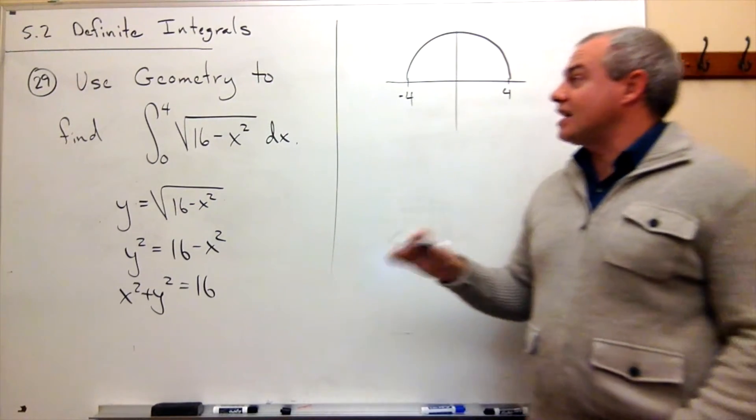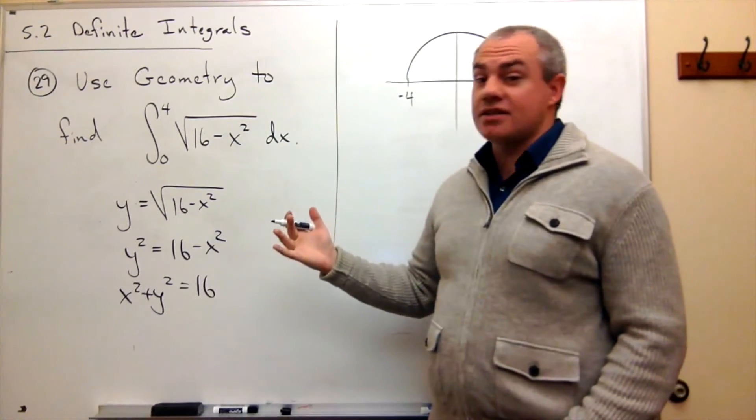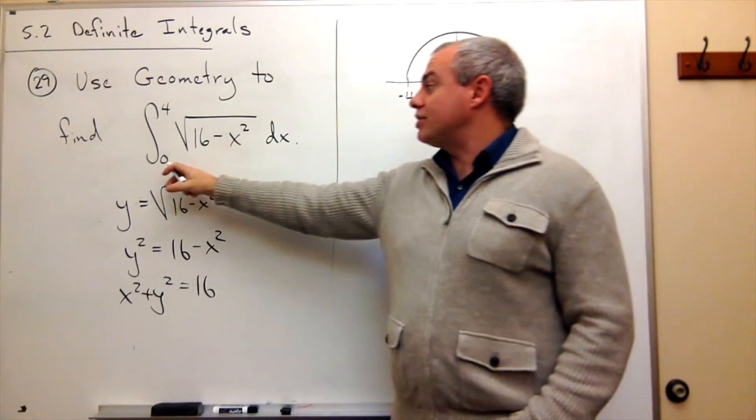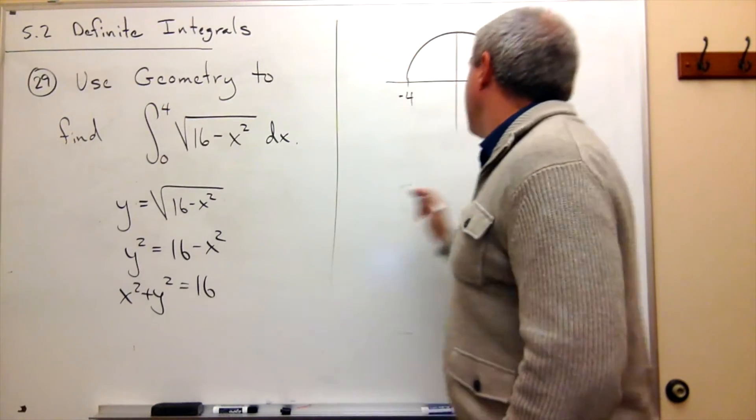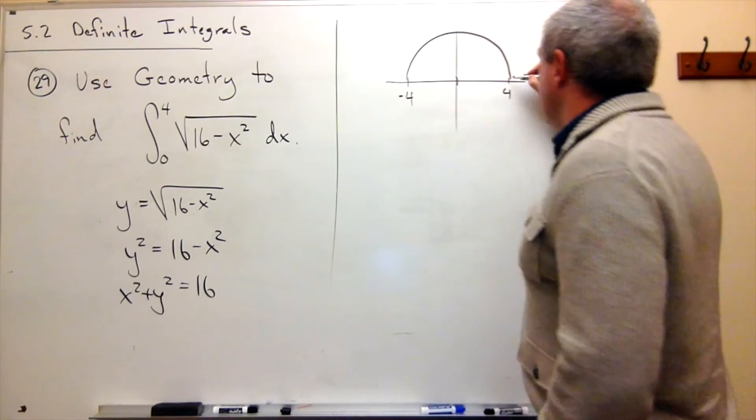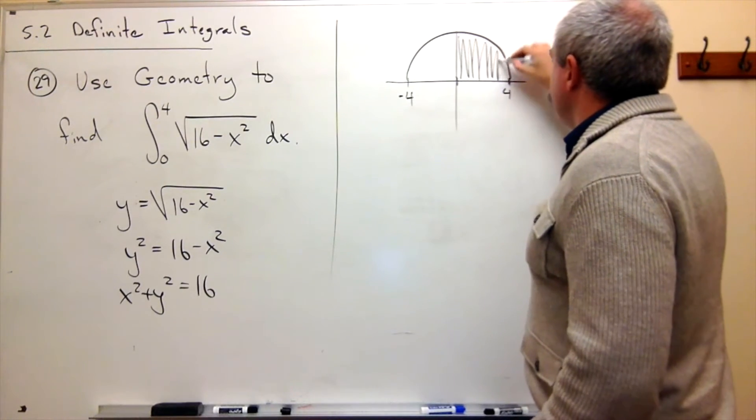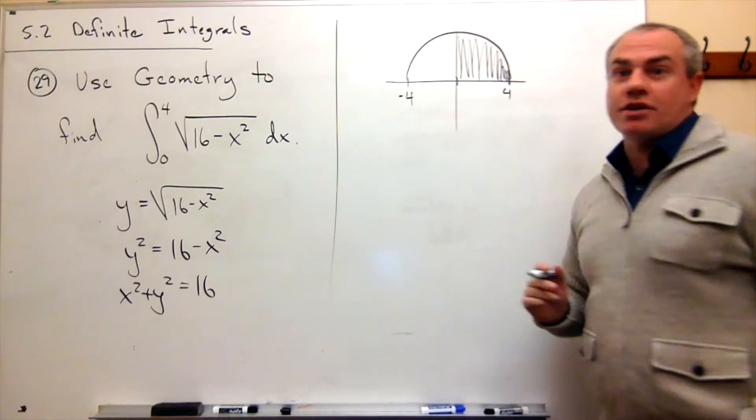And remember what I said the problem was actually asking us is how much area is there under this curve between 0 and 4? So here's 0, here's 4, and I'm asking how much area is under the curve between 0 and 4?